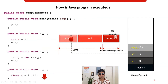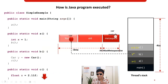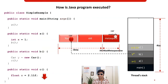The thread then invokes method C, which is added to the thread stack frame. The primitive local variable z of type float is stored in the thread stack, and its value 2.11 is also stored there. Now — can this thread stack grow infinitely? No, it cannot grow infinitely.